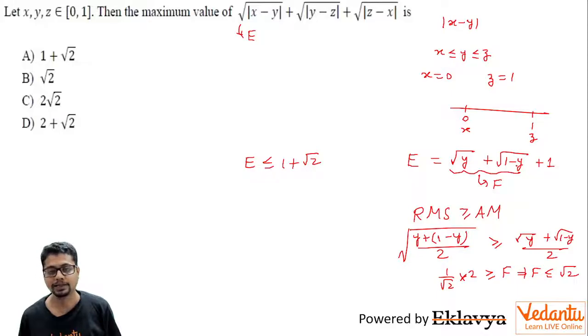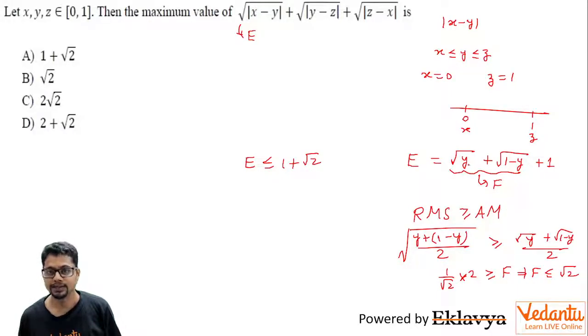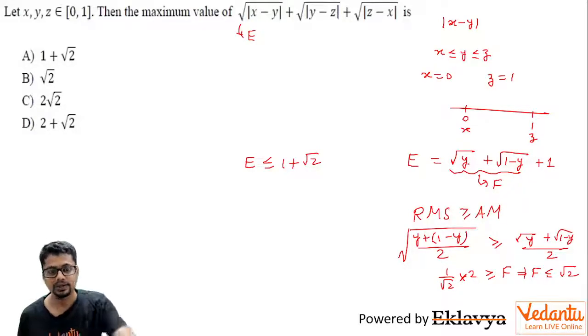This maximum occurs when y and 1−y are both equal, that is when y = 1/2 — which we had already deduced earlier through symmetry. Thanks for listening.